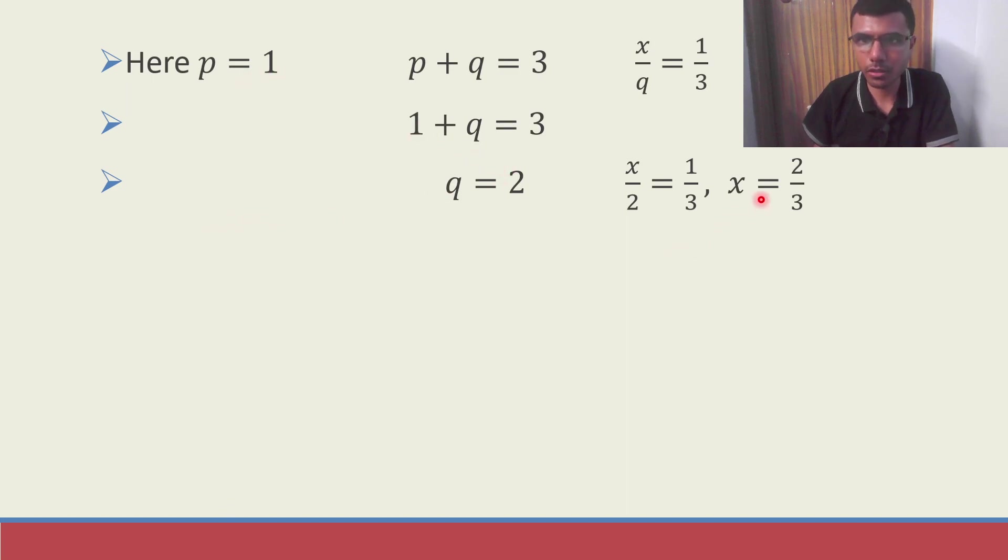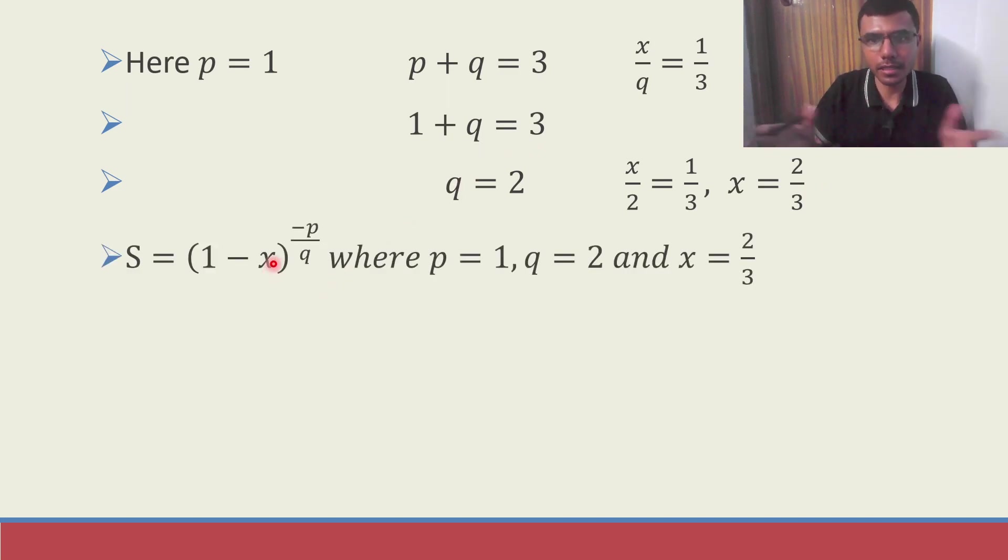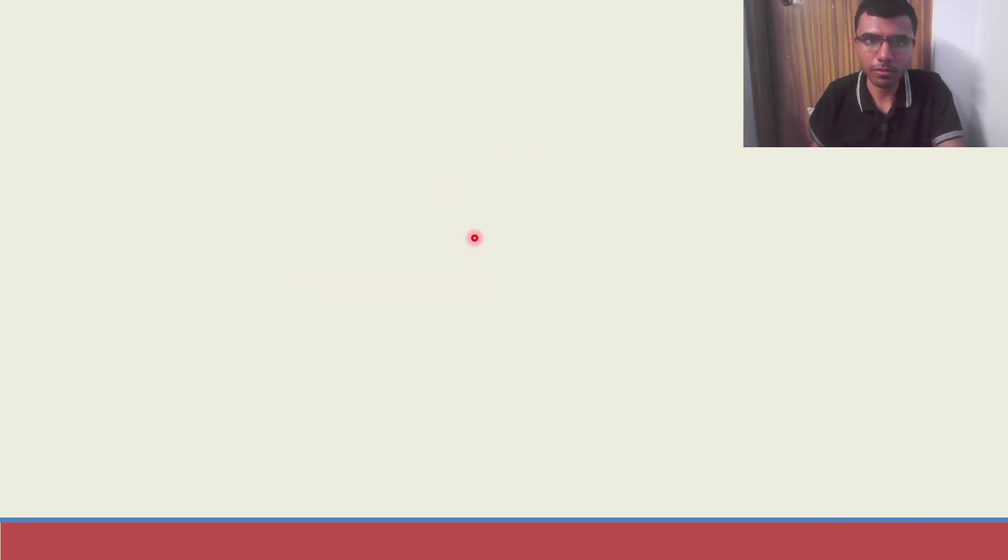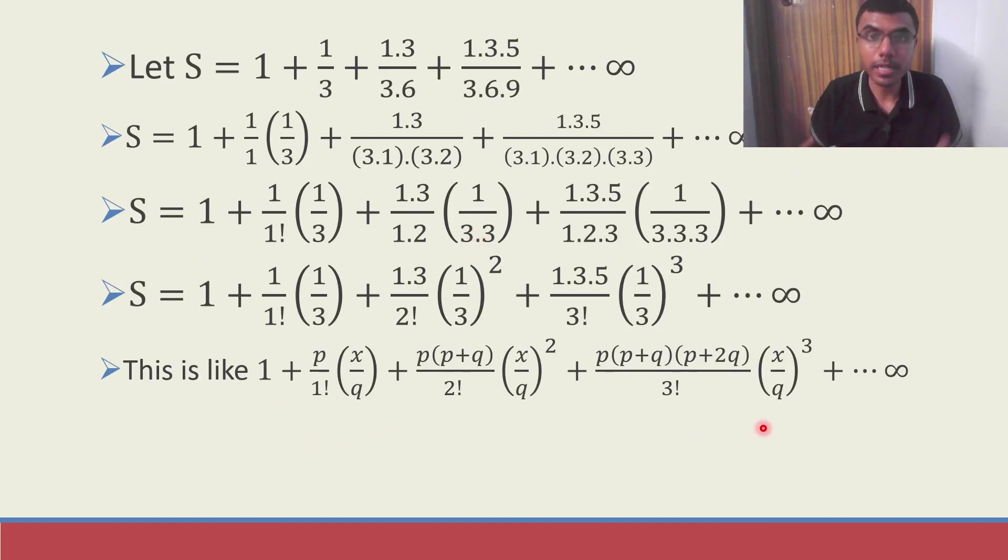So I got my p, q and x. Now S is nothing but that entire series which you saw. This is nothing but expansion of 1 minus x whole power minus p by q. This is nothing but expansion of 1 minus x whole power minus p by q.